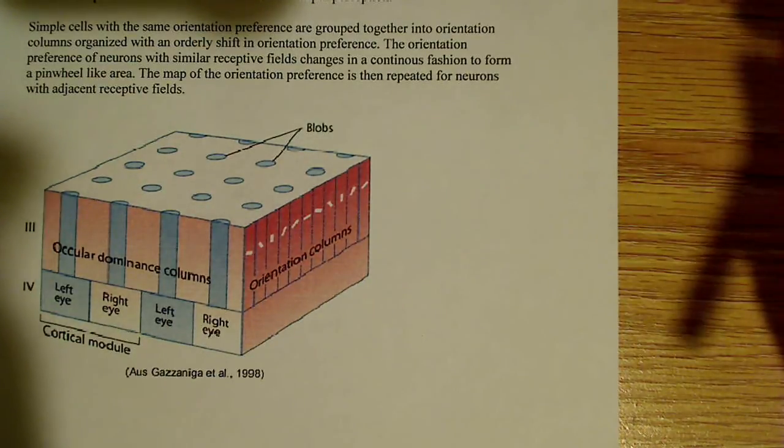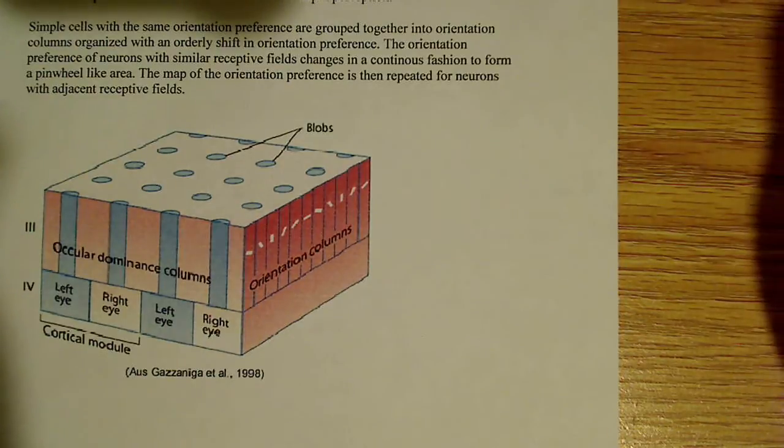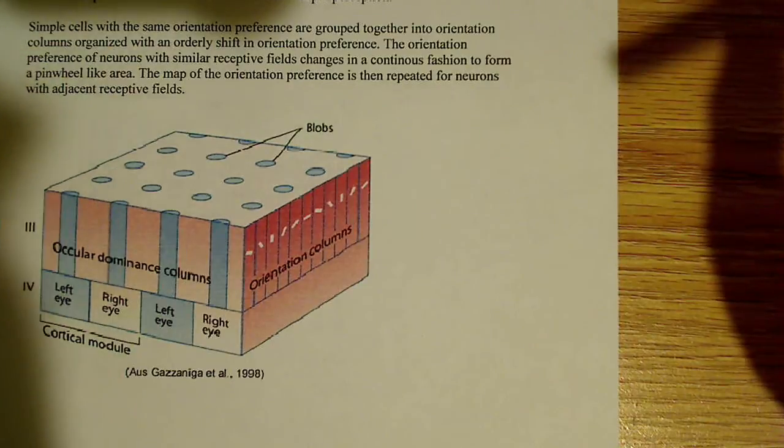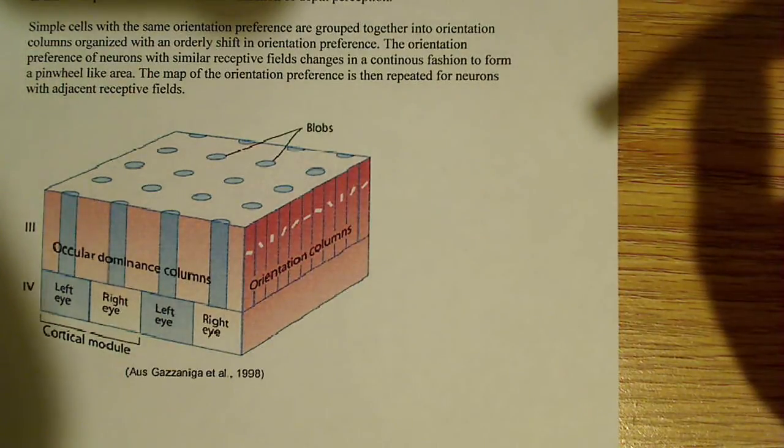And what ends up happening here is it forms a pinwheel-like area. And the map of the orientation preference is then repeated for neurons with adjacent receptive fields.